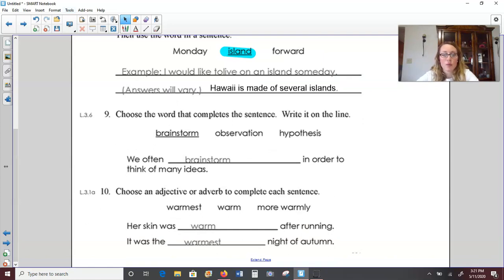Number nine, choose the word that completes the sentence. We often brainstorm in order to think of many ideas. We do that in writing sometimes, brainstorm ideas to write about. And number ten, choose an adjective or adverb for each sentence. Warmest, warm, or more warmly. Her skin was warm after running, and that's an adjective describing the skin. It was the warmest night of autumn. And again, that is an adjective describing the night.